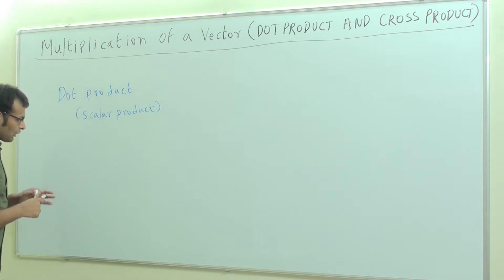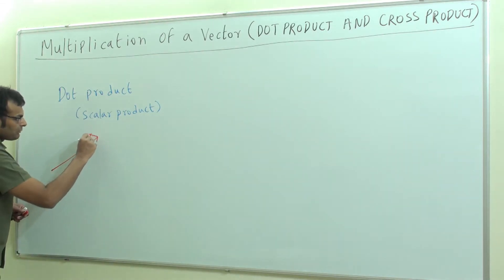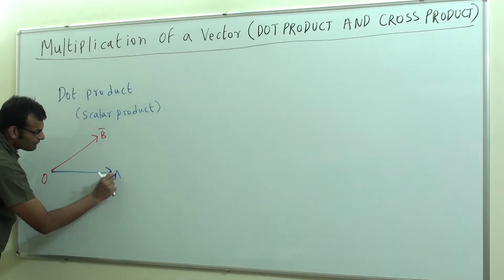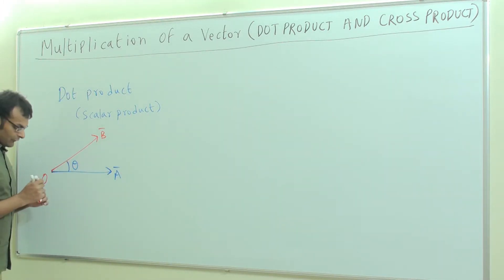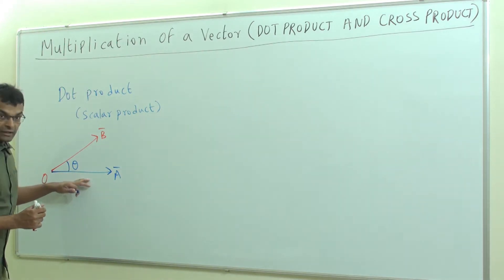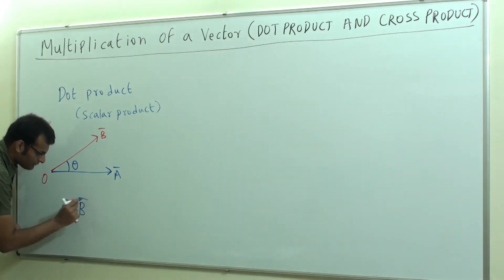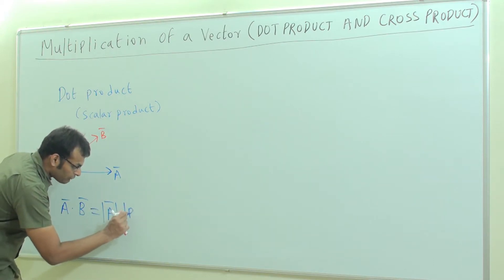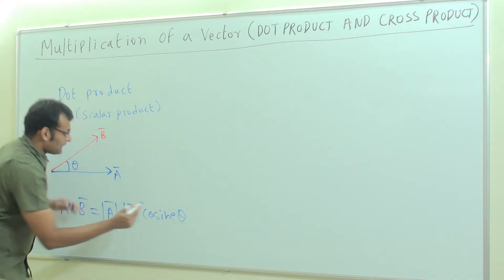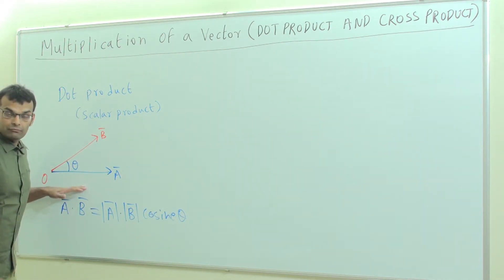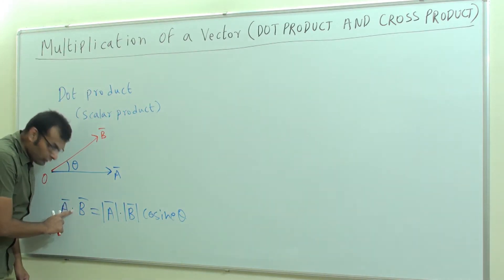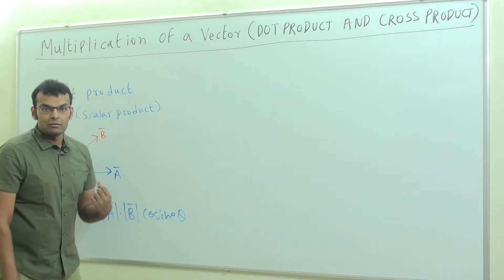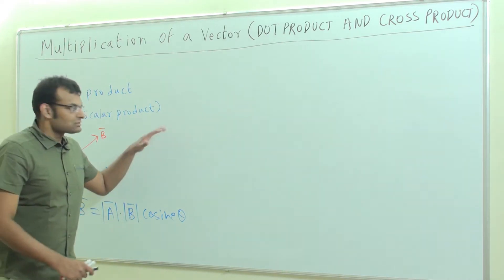Now we have two vectors. Let this vector be B bar, this point be O, and another vector A bar. A bar is making an angle theta with B bar. If I am asked to find the dot product of these two vectors, that is A bar dot B bar, the value is: magnitude of A bar into magnitude of B bar and cosine of the angle between the two vectors. So the basic formula for dot product is A bar dot B bar equals magnitude of A bar into magnitude of B bar into cosine of the angle between the two vectors.